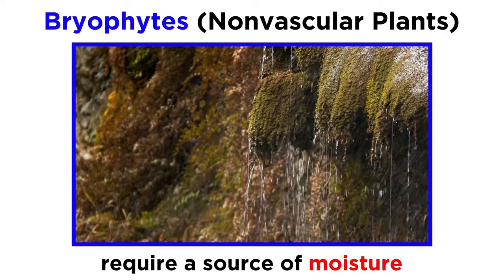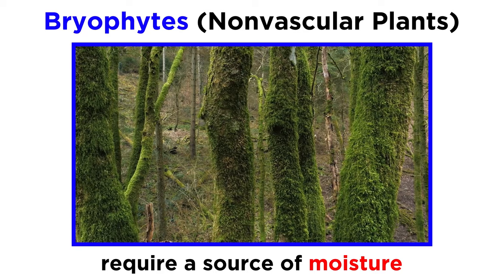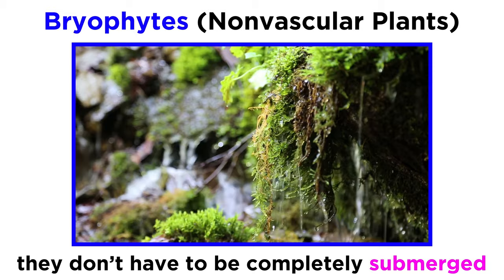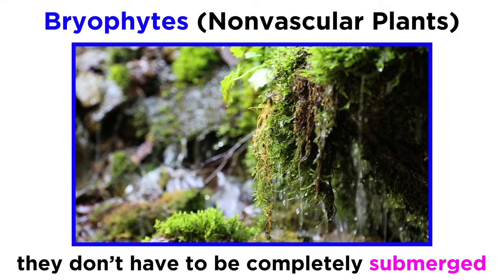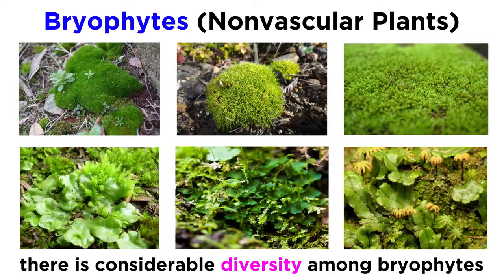Bryophytes are very sensitive to moisture, as they don't have a vascular system to bring water up from deep in the soil. You'll usually find bryophytes living in cool, moist places, like how moss grows on tree bark in dense forests or on rocks next to streams. However, they don't need to be completely submerged in water, giving them an evolutionary advantage over algae and other plant ancestors, so these were the first types of plants to ever exist outside of some body of water.